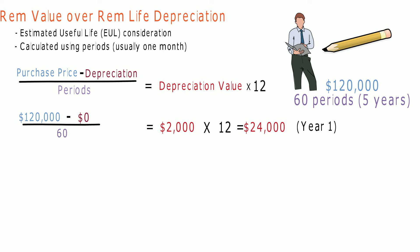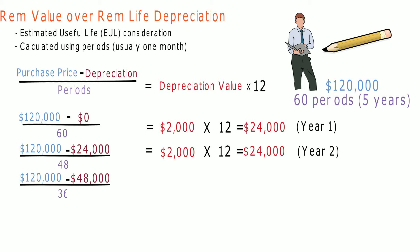Next we will calculate the next year's depreciation by taking our cost minus our previous year's depreciation of $24,000, divided by the remaining periods to get our monthly depreciation of $2,000. The asset will depreciate by the same amount every year. At the end of the asset's useful life, the depreciation value will equal the asset's original cost.